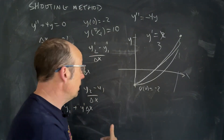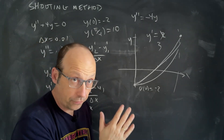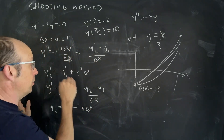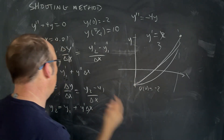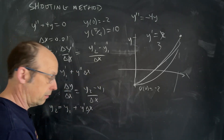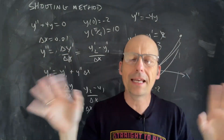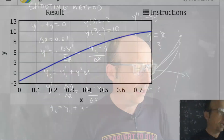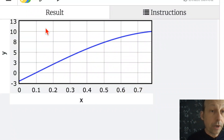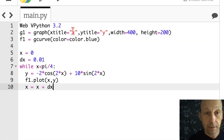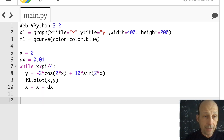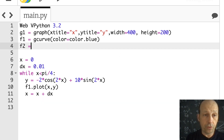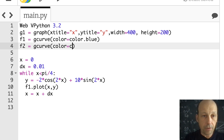To implement this in Python, I'll do it manually first: pick a value for y-prime, see where it ends up, change it if needed, then automate it with animation. I'll make a new curve F2 as a G-curve with color red for the shooting method results, leaving the original blue analytical solution alone.